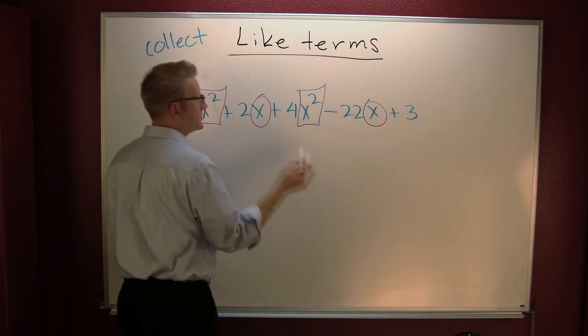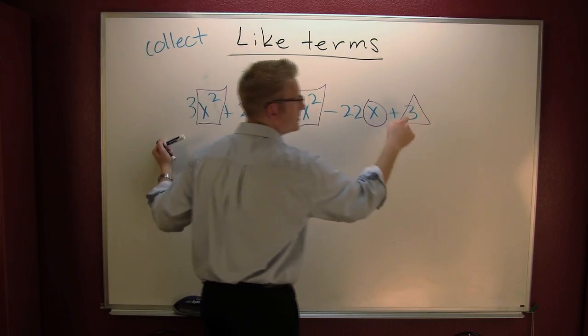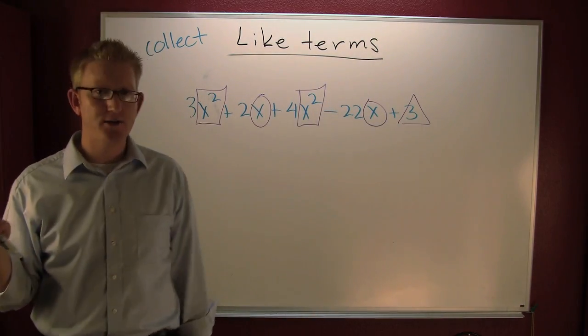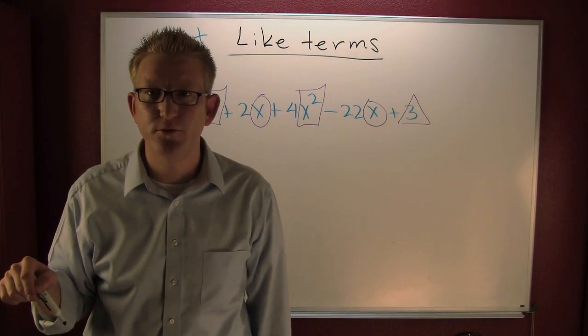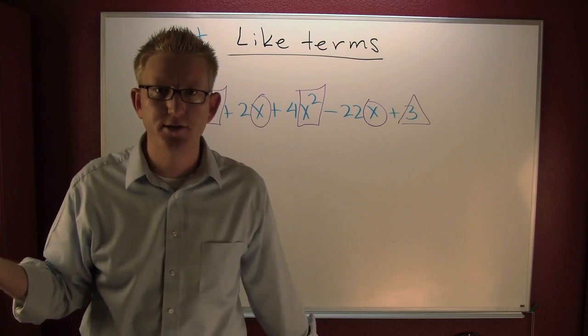Circles around those. And then the lonely triangle. That's a constant term. It has no variable part. It never changes. It remains constant.